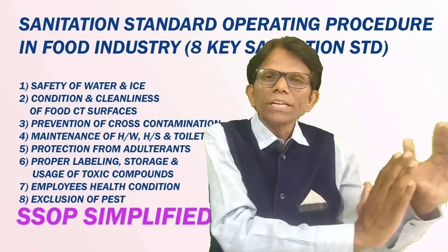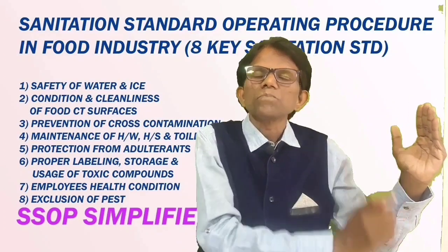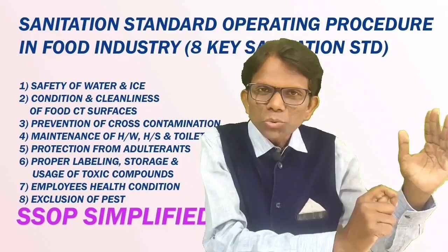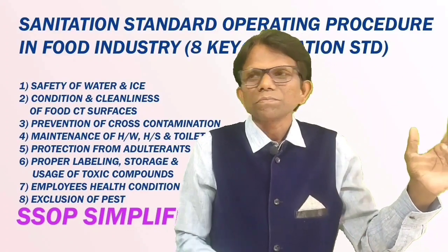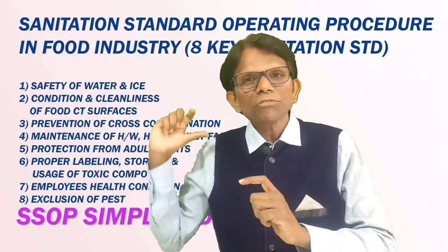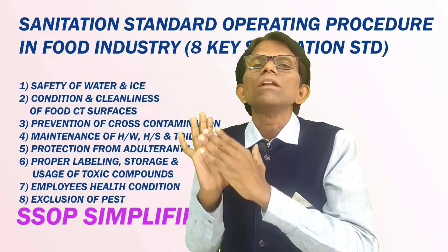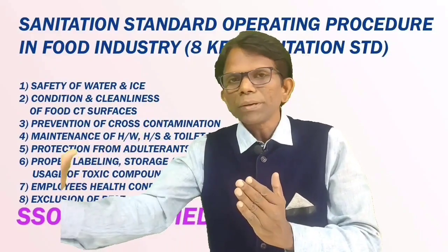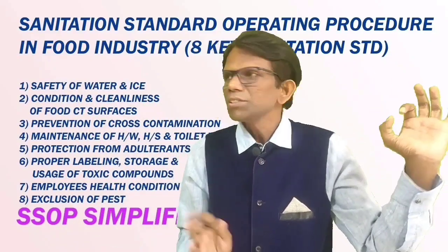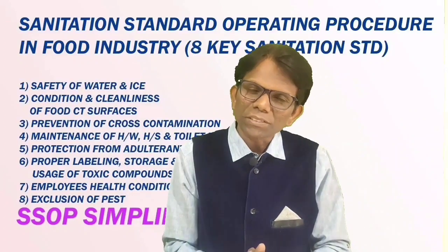The sixth SSOP component is proper labeling, storage, and usage of toxic compounds. Here, the mother, while preparing the food, will read through the guidelines of the instant food — such as how many spoons to add, how many tablespoons in hot water, how to dissolve — the procedure. The mother reads carefully before preparing the food, just as in a food facility we follow SSOP component 6.